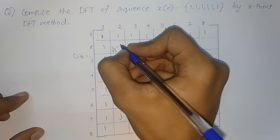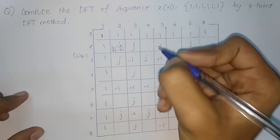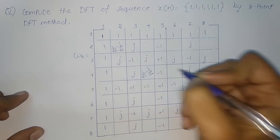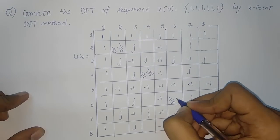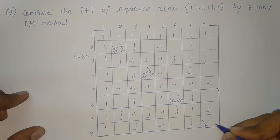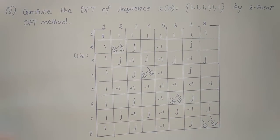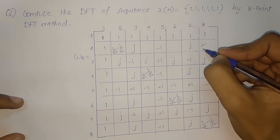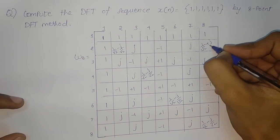For the diagonal going from top-left to bottom-right, you mark it with 1 by root 2 minus j by root 2. And then for the diagonal going from top-right to bottom-left, you mark it with 1 by root 2 plus j by root 2.